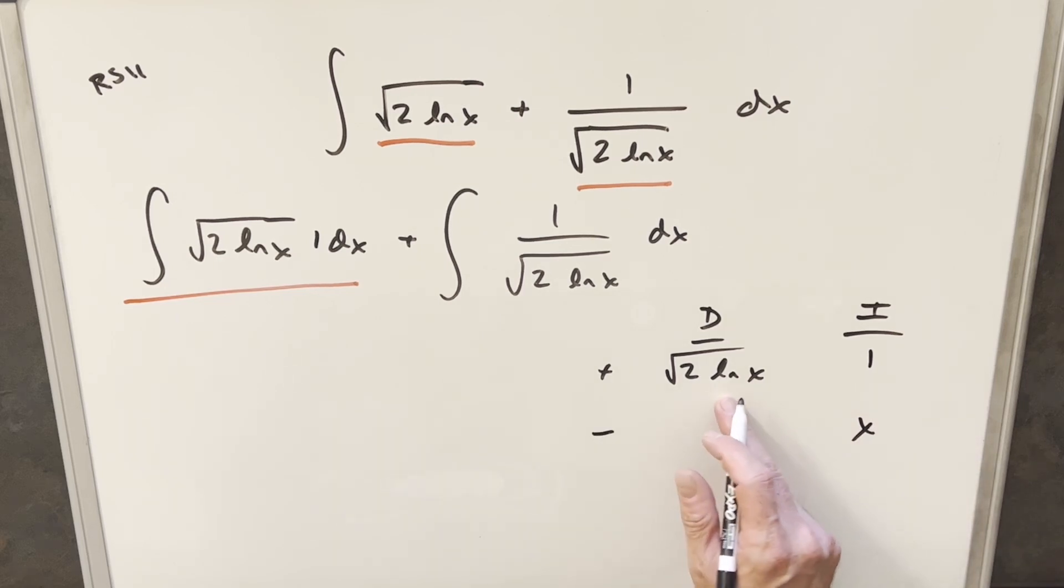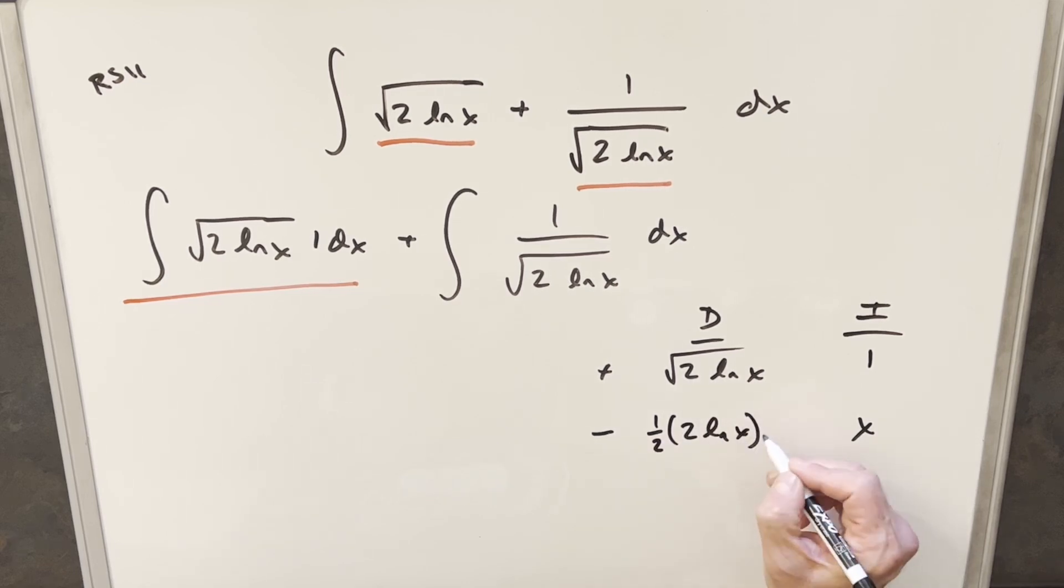And then differentiating over here, first we'll use the power rule, viewing the square root as a half. So we'll take a half up front, we'll have 2 ln x to the minus one half here. And then we need the chain rule. The derivative of the inside part is going to be just 2 over x.